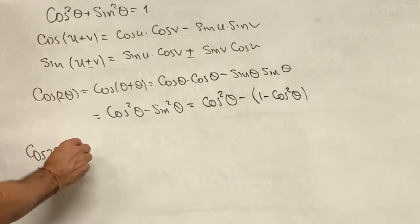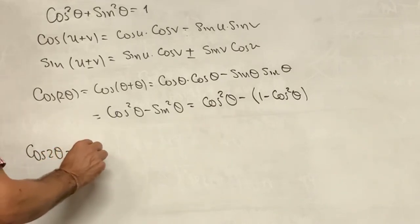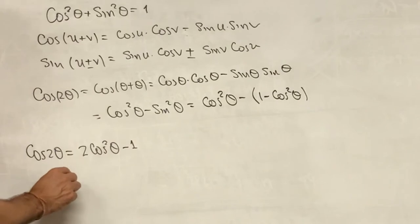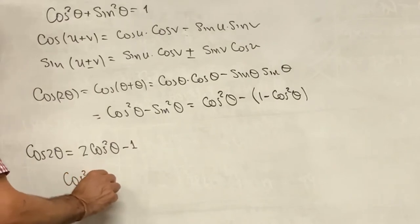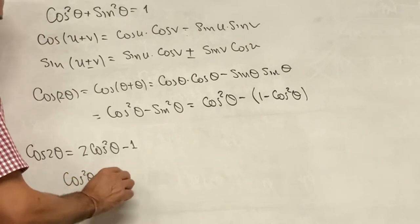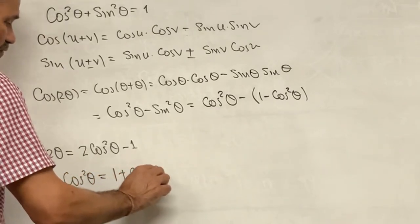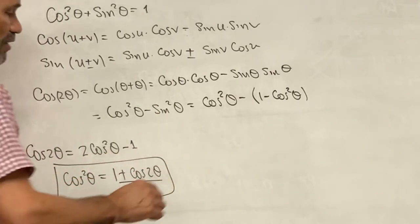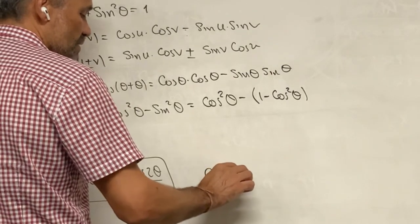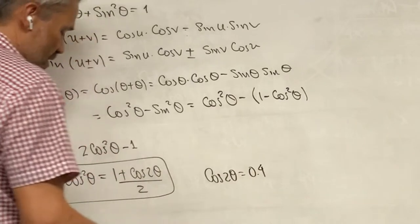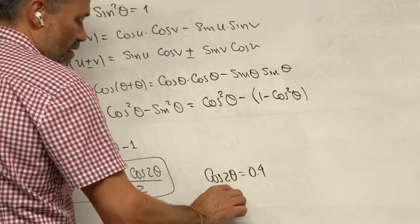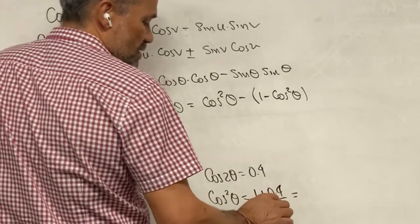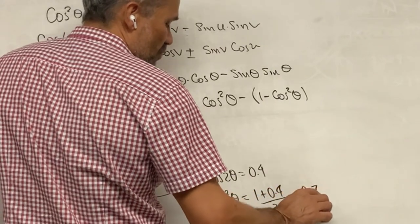Cosine of 2 theta is equal to 2 times cosine squared of theta minus 1. Or what is the same, we can solve for cosine squared of theta: cosine squared of theta is equal to 1 plus cosine of 2 theta divided by 2. Notice that, for example, if we know that cosine of twice an angle is 0.4, then cosine squared of that angle would be 1 plus 0.4 over 2, which is 1.4 divided by 2, equals 0.7.